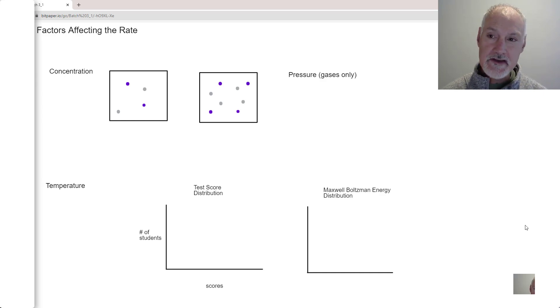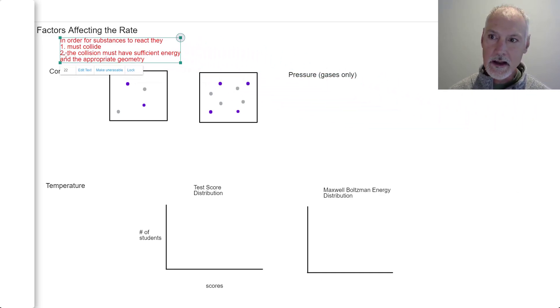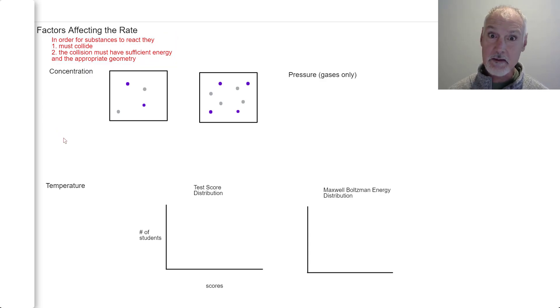In this program, we're going to take a look at the factors that affect the rate of a reaction. When explaining those factors, they go back to a thorough understanding of collision theory. This is something you need to commit to memory: in order for substances to react, first, they must collide, and second, that collision must have sufficient energy (the activation energy) and be with the appropriate geometry.